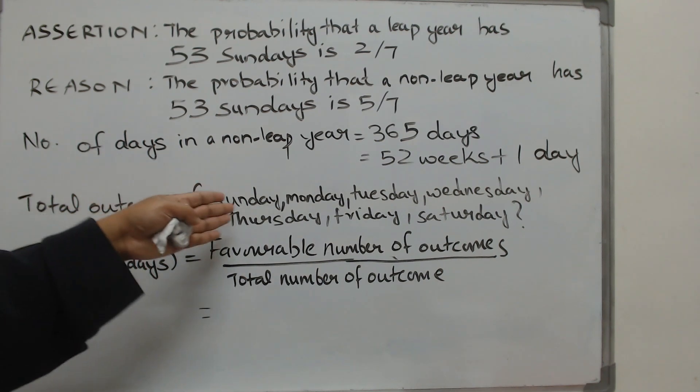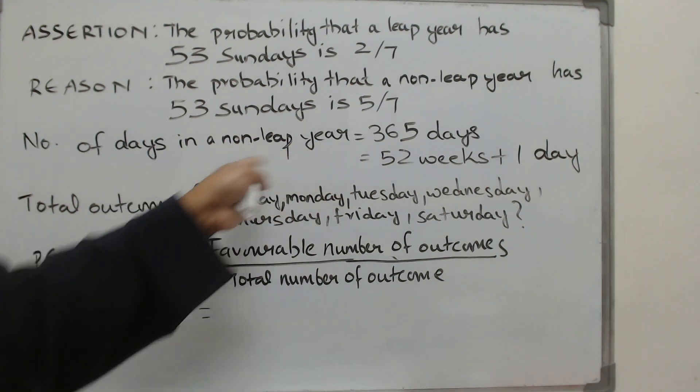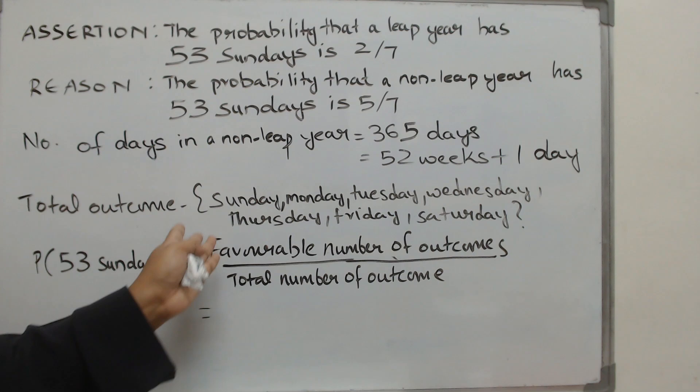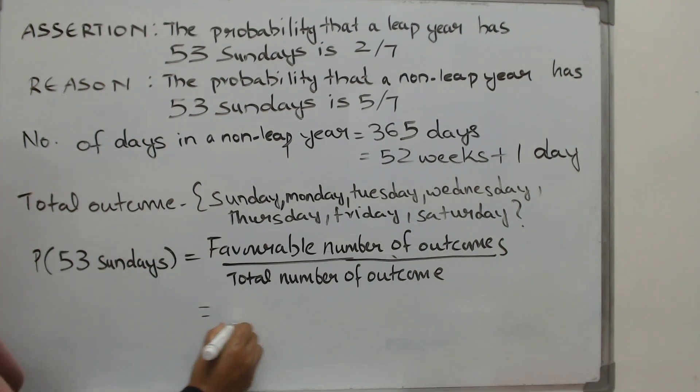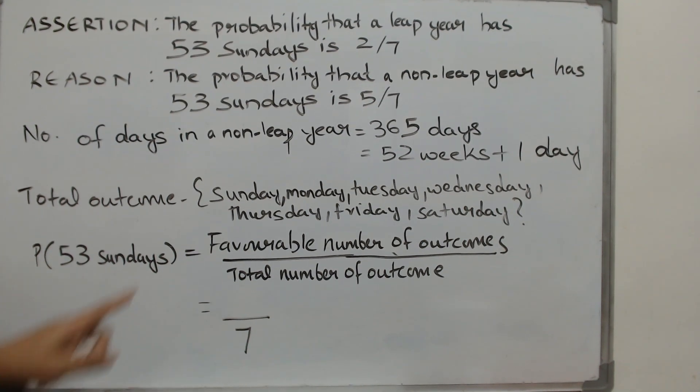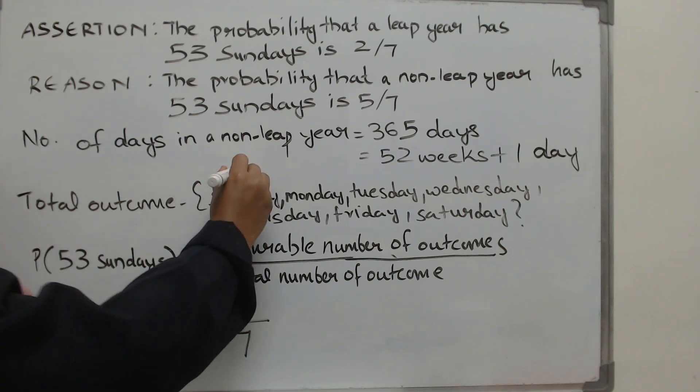It can be a Sunday, a Monday, a Tuesday. There are 7 options that you can choose from. Out of this the total number of outcomes is 7. Out of it how many Sundays do you see? You see just one Sunday.